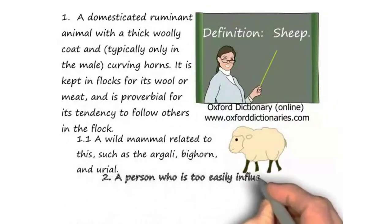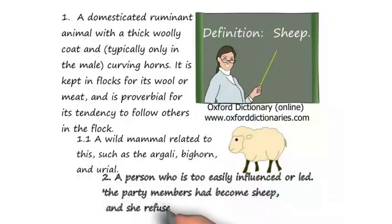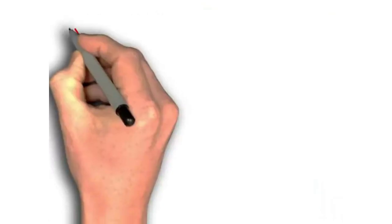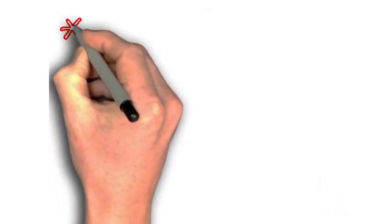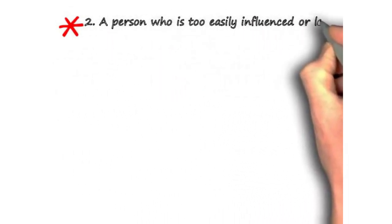The party members had become sheep and she refused to be taken in. Let me say that again, that was just a sentence: a person who is too easily influenced or led is considered a sheep.